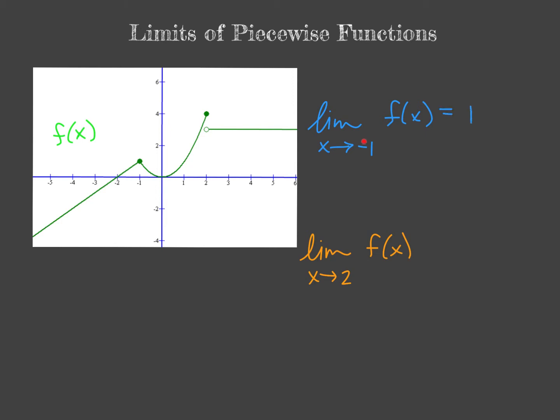Now f of negative 1 is also 1, and that's why this function is in fact continuous here at negative 1.